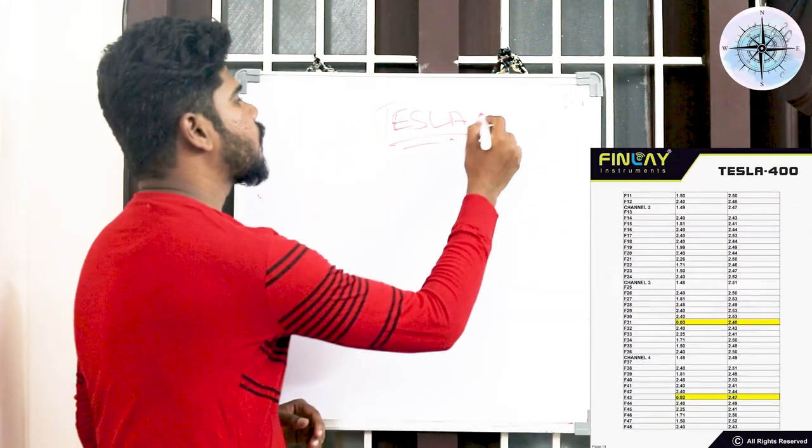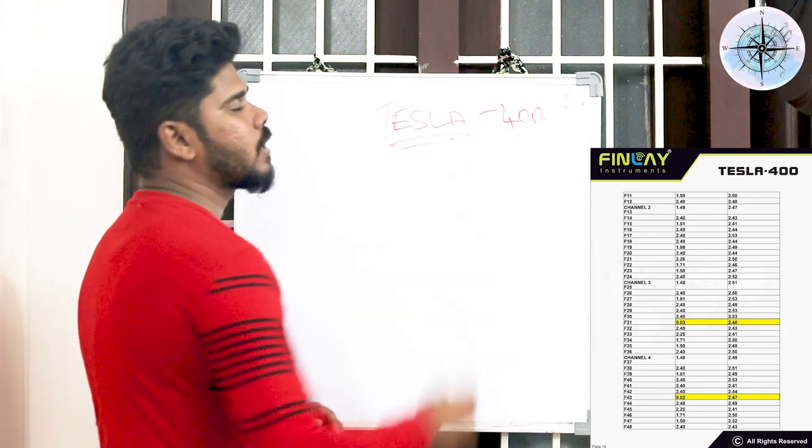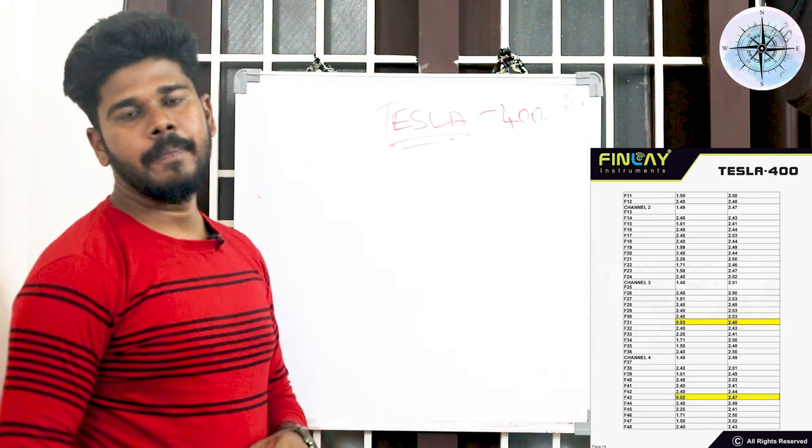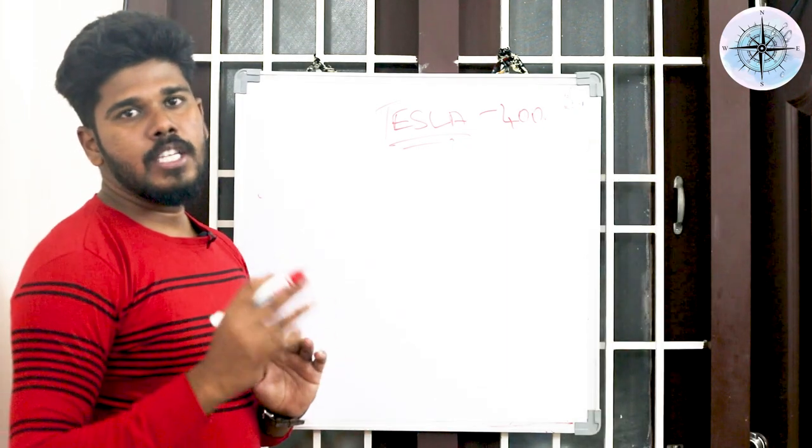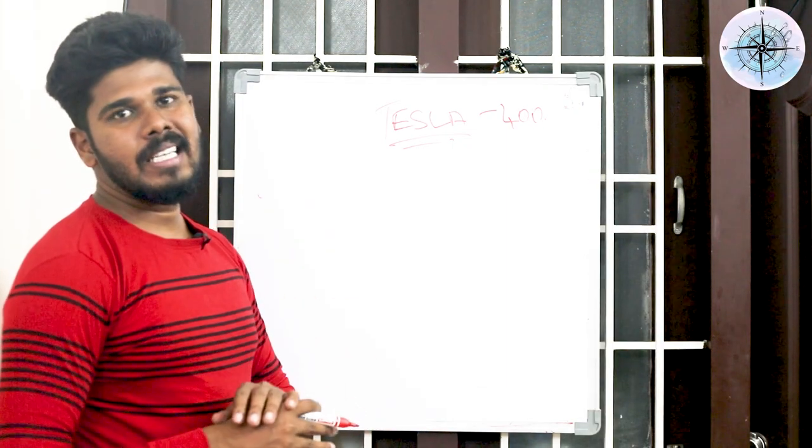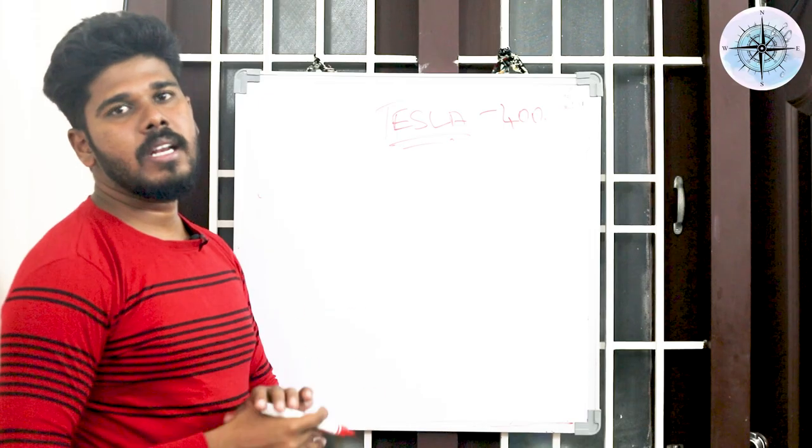For example, I'm considering Tesla 400 so that you will be able to understand it easily. Tesla 400 comes with eight probes, each probe has one meter distance. One is for receiver side and the other one is for transmitter side.